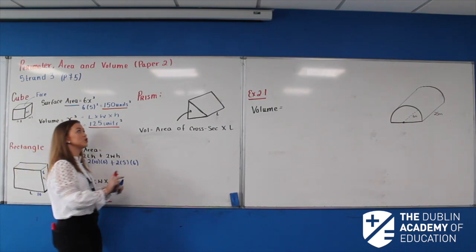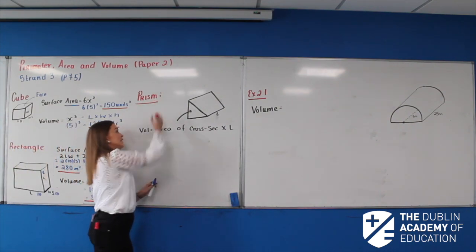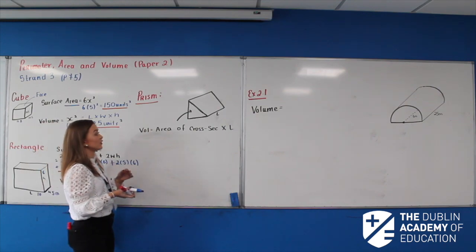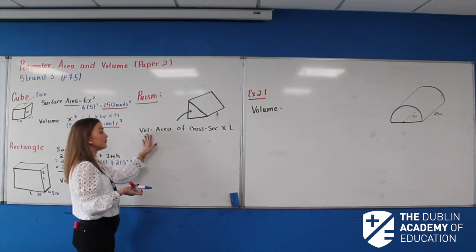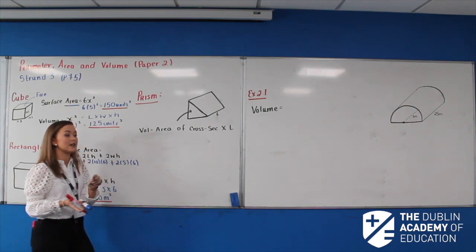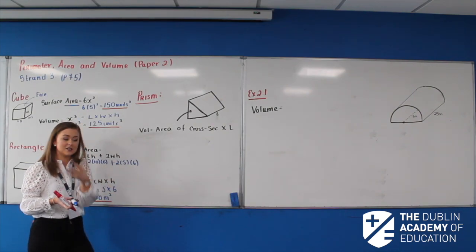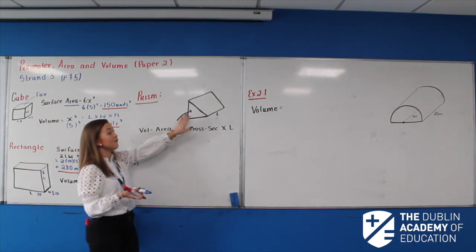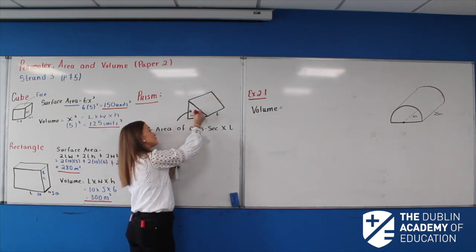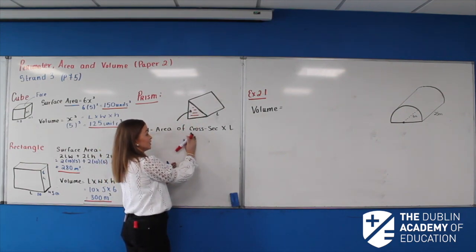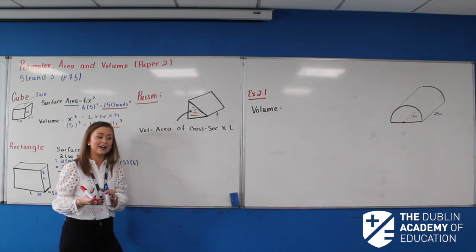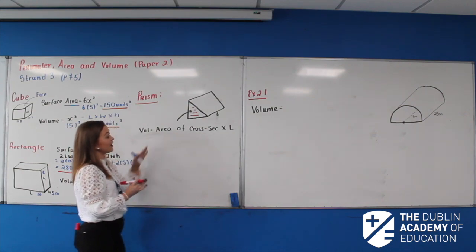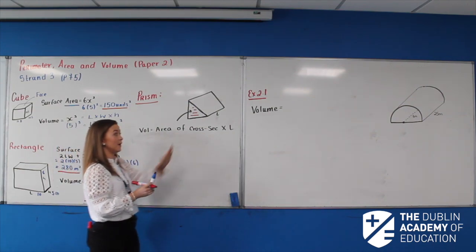Now I'm going on to the prism. Prisms can confuse some people but they're quite simple. When looking at a prism we're focusing on the volume. A prism isn't a defined shape as such — it has a face, which I'll call the cross-sectional area, which we recognise. Something like a triangle or sometimes a combination of two shapes. We're going to have the area of the cross-section multiplied by the length.